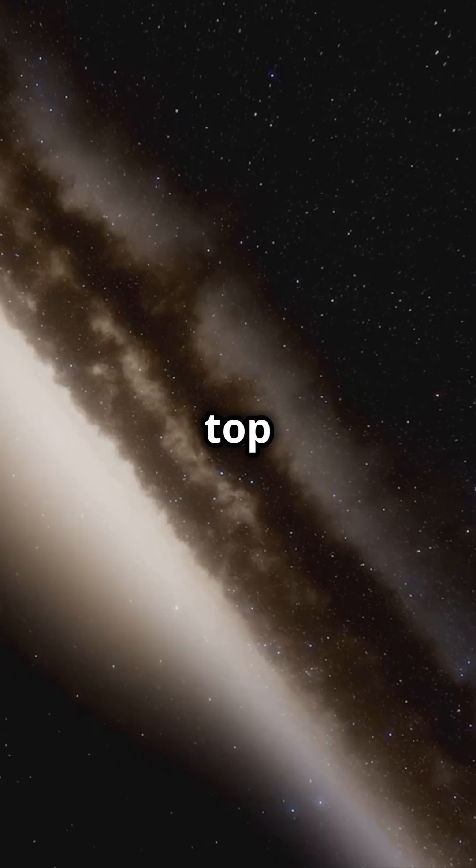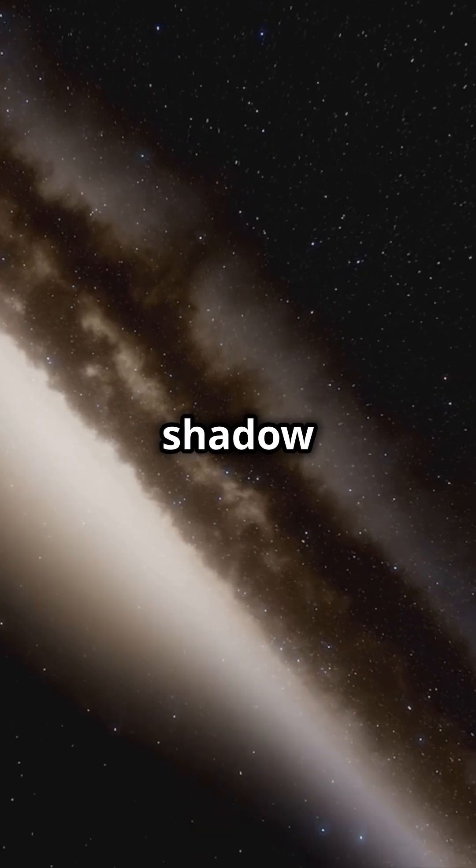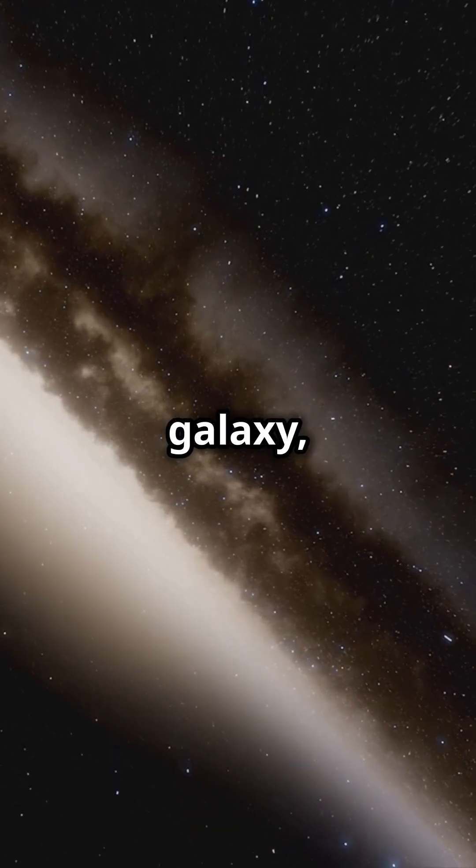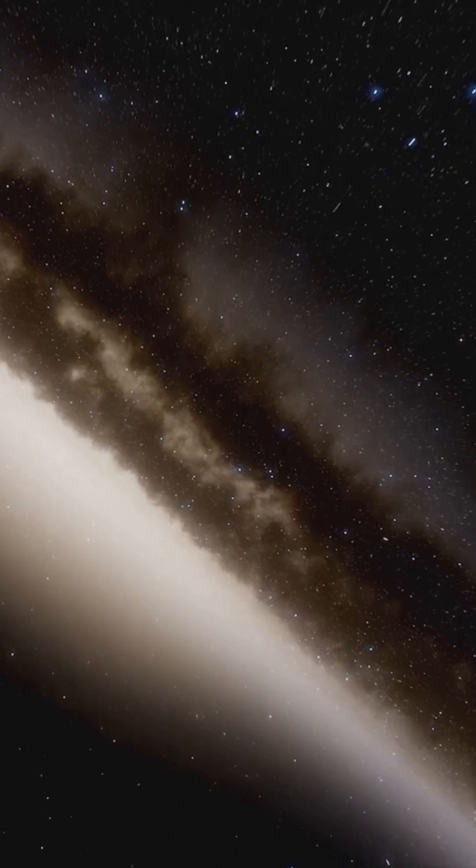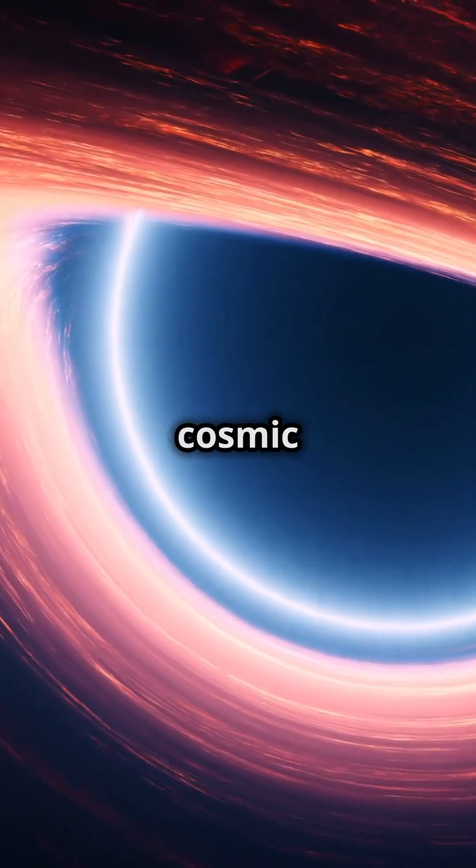The cherry on top was the first image of a black hole's shadow in the M87 galaxy, taken by the Event Horizon Telescope in 2019, like a selfie with a cosmic monster.